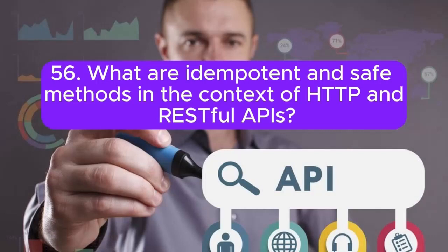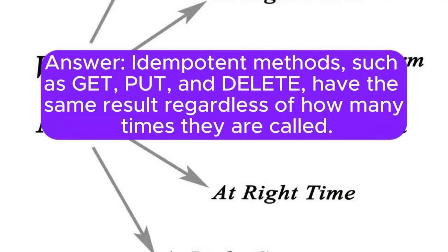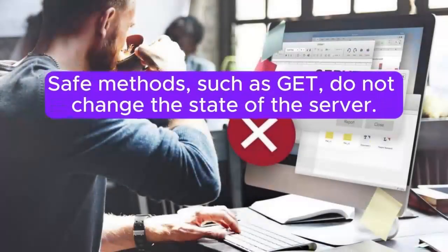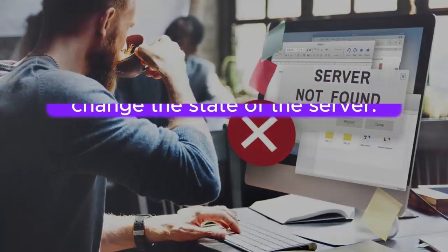Question 56: What are idempotent and safe methods in the context of HTTP and RESTful APIs? Idempotent methods — such as GET, PUT, and DELETE — have the same result regardless of how many times they are called. Safe methods, such as GET, do not change the state of the server.